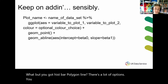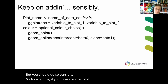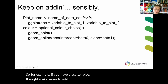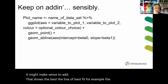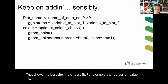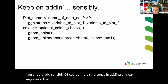You can keep adding geometries, but you should do so sensibly. For example, if you have a scatter plot, it might make sense to add a line showing the line of best fit — the regression value derived from those points. You should add sensibly; there's no sense in adding a linear regression line to a histogram — that just creates confusion for everyone.